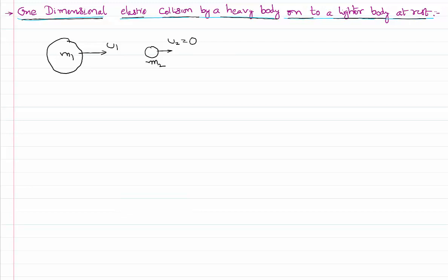To know this, first of all we need to know the equations for the velocities of the bodies after one-dimensional elastic collision. We have derived these in the previous video lesson. If you don't know this derivation, please go through and learn it. To avoid repetition, I am not doing the derivation here. The velocity of the first body after one-dimensional elastic collision is as follows.